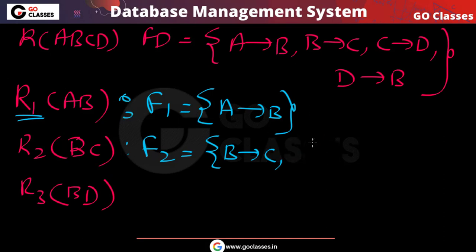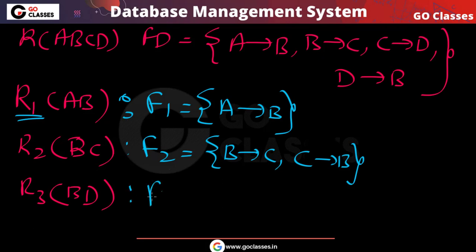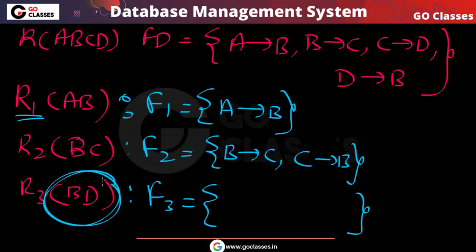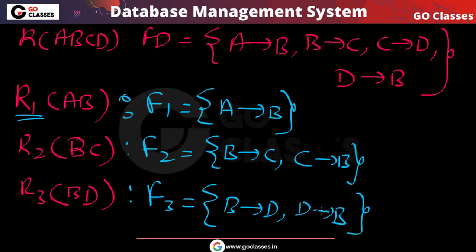From C→D and D→B, we get that C can also determine B. So F2 includes B→C and C→B. For R3(BD), F3 includes B→D and D→B, since both hold on these two attributes.